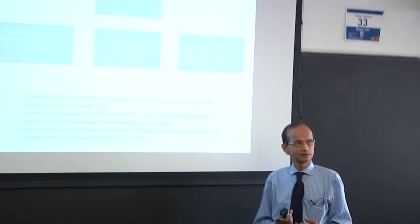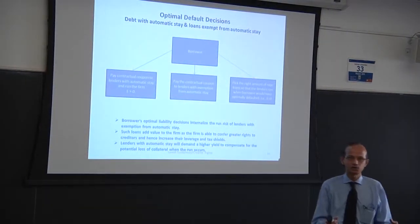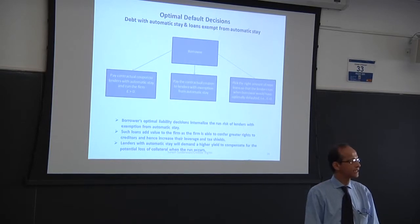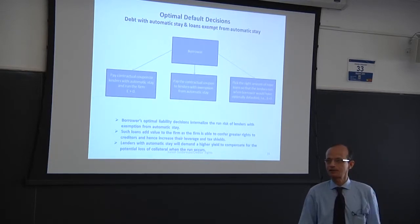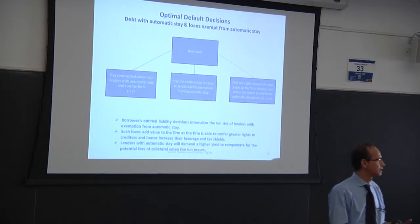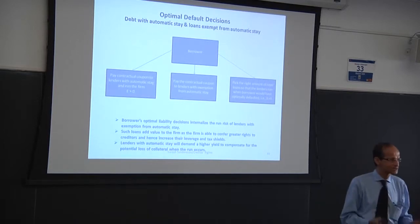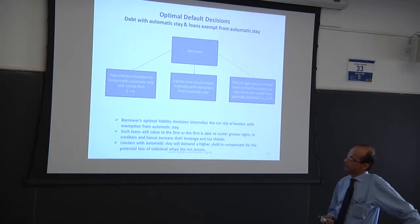How would this be modified when you have both types of debt — inside automatic stay and outside with super priority rights? You have a choice: you can identify your optimal default decision in the absence of super priority debt, and then pick the right amount of repo loan such that the point at which repo lenders would run is precisely when you would have defaulted anyway. That way the run decision by repo lenders does not constrain your default decision, giving you an interior liability structure — which JK and I characterize in the paper.